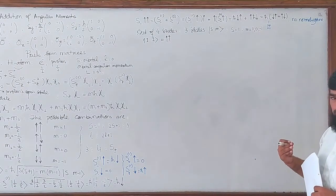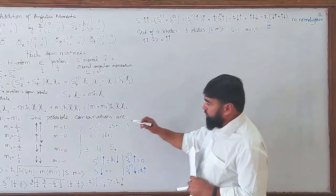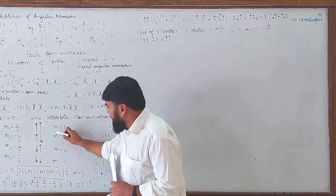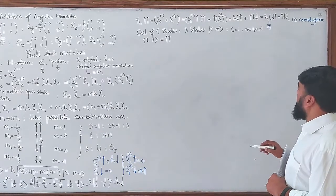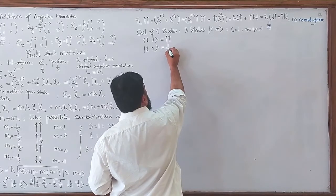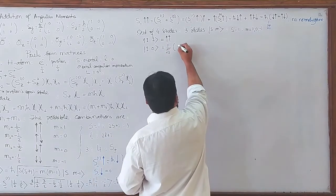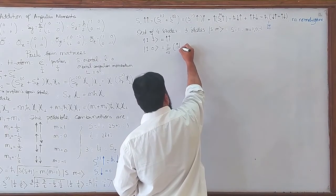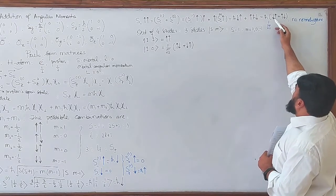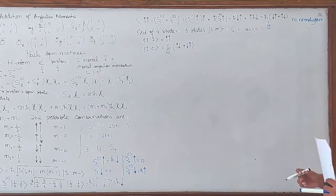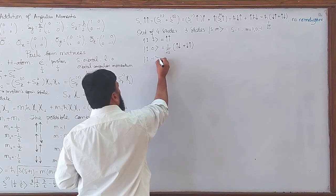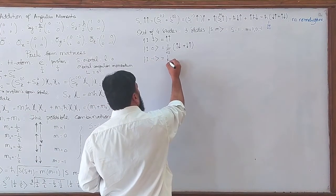Now looking at the zero state: the state |1, 0⟩ is actually (1/√2)(|up,down⟩ + |down,up⟩). And the state |1, -1⟩ is equal to |down, down⟩. Note that the order of arrows here is not important.